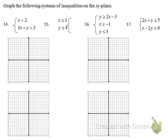Now we're looking at graphing systems of inequalities. For number 14, the first inequality is x < 2 — a vertical dashed line at x = 2, since it's strictly less than. If it were less than or equal to, it would be a solid line. Always check before graphing, because it's easier to fill in a dashed line than to erase a solid one.